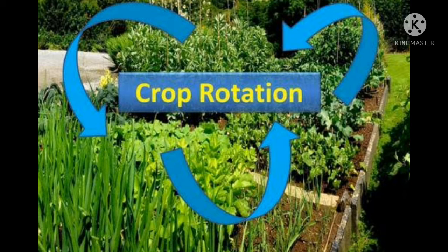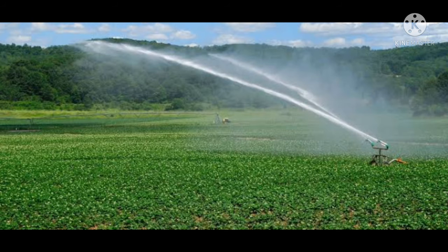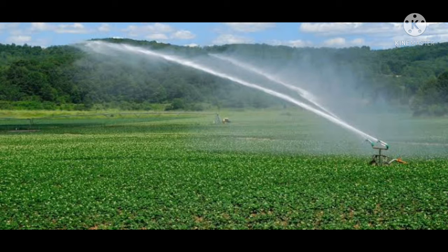Now we will talk about irrigation. Crops need the right amount of water to grow properly. Water is necessary for the absorption of nutrients, minerals, and fertilizers by the crop. The supply of water to agricultural fields at regular intervals of time is called irrigation. Water for irrigation is obtained from various sources: wells, tube wells, ponds, lakes, and rivers.